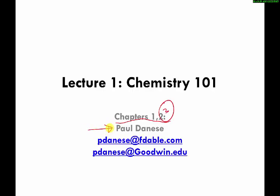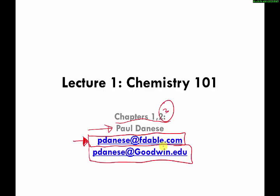I'm your teacher. My name is Paul Denise. This is my personal/business email address. You can expect emails from me to come from this email address. I also have a goodwin.edu email address, but I do not check it very often. However, if you send an email to my goodwin.edu address, it will be automatically forwarded to my personal/business email address, so I will see it as soon as I check my regular email anyway.